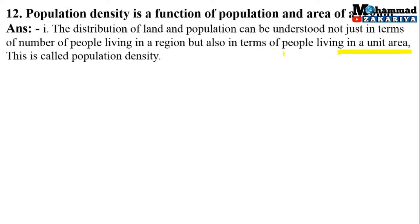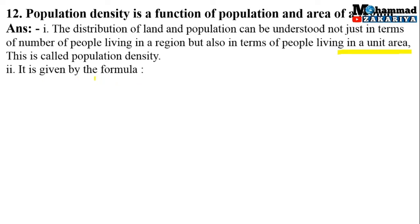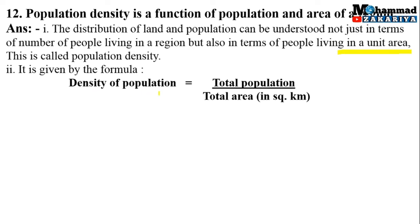जो people population वो unit area में उनकी density कितनी है, इसके according हम decide करते हैं कि वहाँ पर population density high है, low है या moderate है। हम overall population के numbers को नहीं देखते बल्कि उसका land surface area कितना है और उस region के अंदर कितने लोग रहते हैं, इसके according population density measure करते हैं। इस formula के through: population को area (square kilometer में) से divide करते हैं।